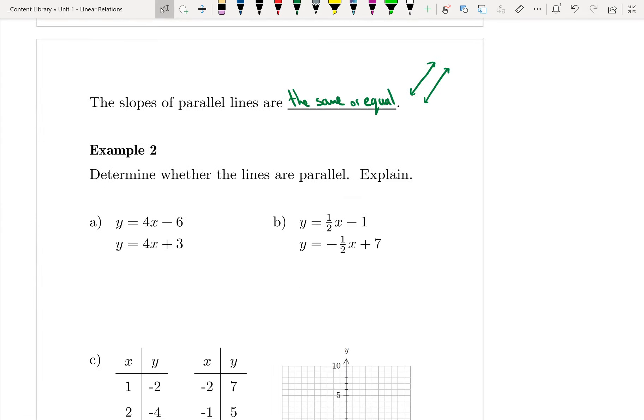So in example two, we're going to look at two sets of lines, and we're going to try to determine if those lines are parallel or not. So looking at the first set, y equals 4x minus 6, and y equals 4x plus 3, I need to look at the slopes.